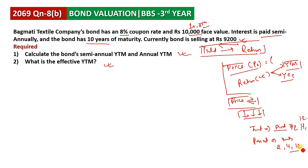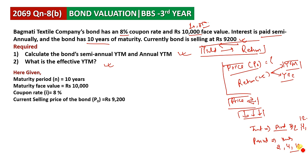Now let's look at the problem parameters. The maturity period is 10 years. We have mature bond rates. The face value is 10,000 rupees — normally in Nepal bonds have a face value of 10,000. In this case, the current selling price is also given.